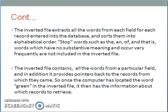The inverted file extracts all the words from each field for each record entered into the database and sorts them into alphabetical order. Stop words such as 'the', 'an', 'of', 'that', 'is', and other words which have no substantive meaning and occur very frequently are not included in the inverted file. The inverted file contains all the words from a particular field and in addition, it provides pointers back to the records from which they came. So once the computer has located the word, say 'green', in the inverted file, it then has the information about which records to retrieve.